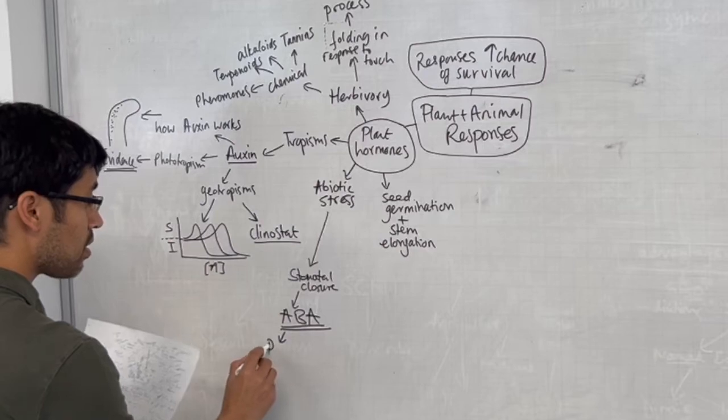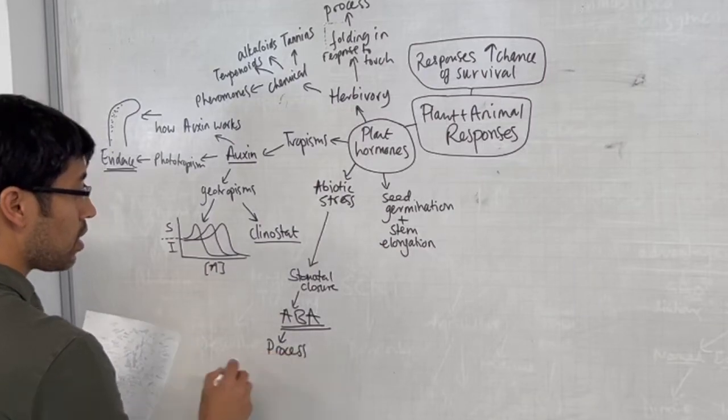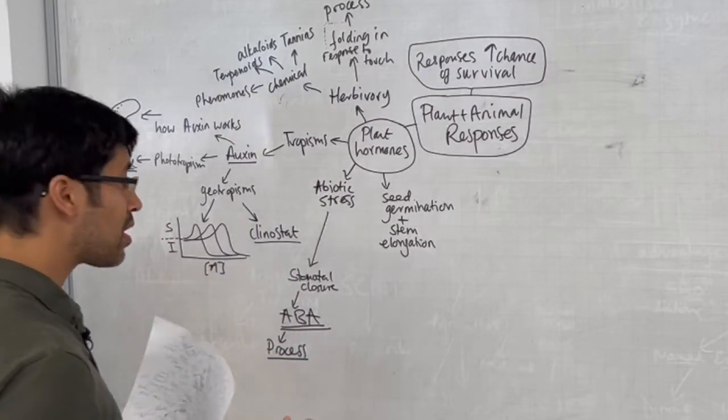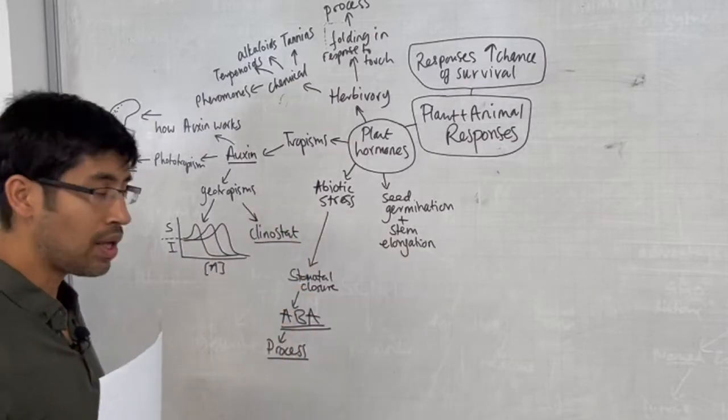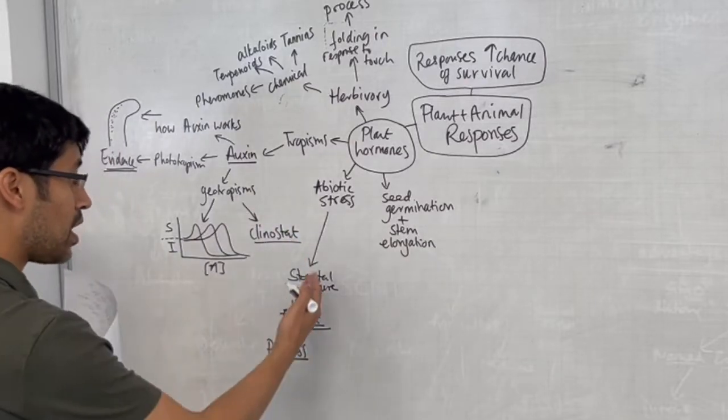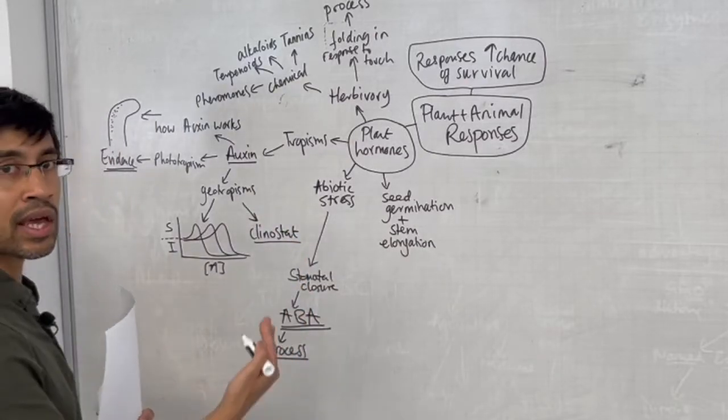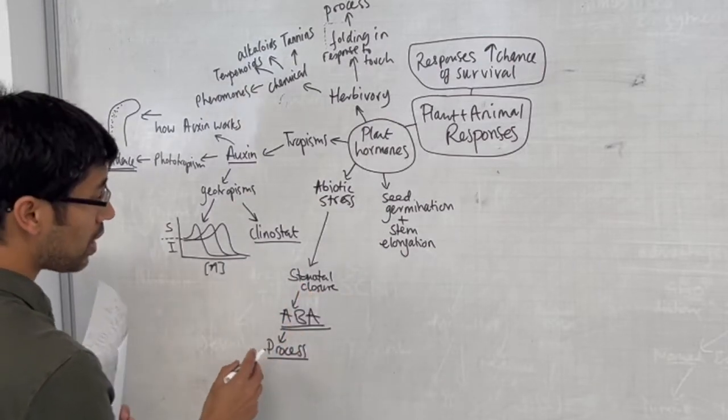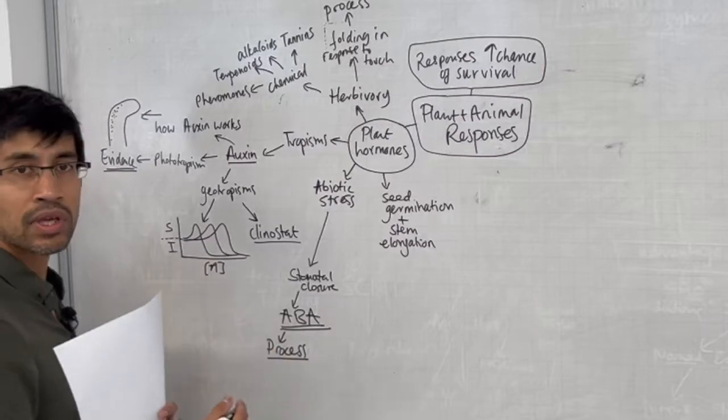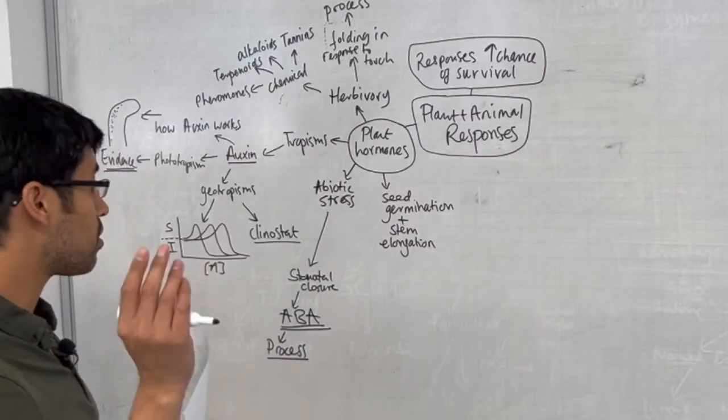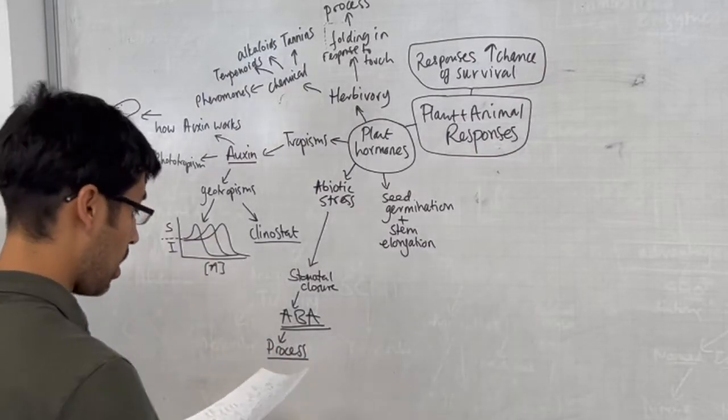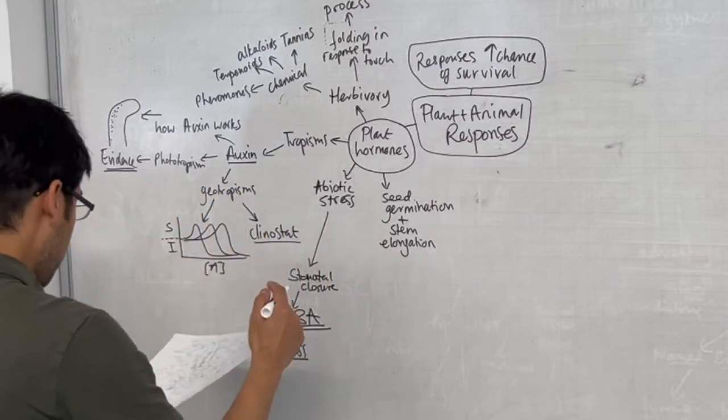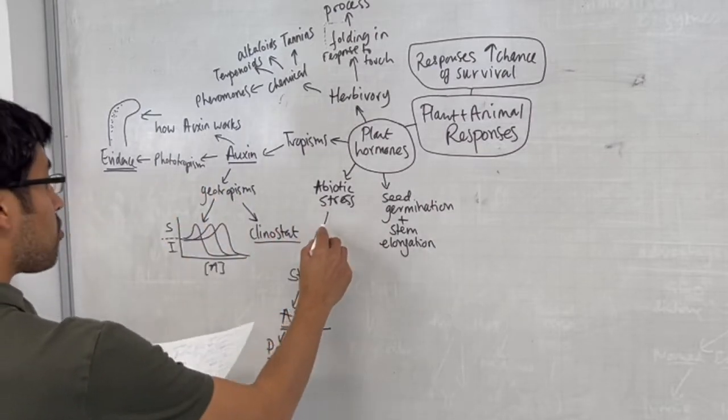Stomatal closure is effected through the action of the hormone abscisic acid, ABA. That's our next named hormone. Again, there is a process. Depending on how much time you have available, just have a look at that. For many purposes it might be enough that you understand ABA is involved. If you have the luxury of time, you might want to look at how ABA does that.